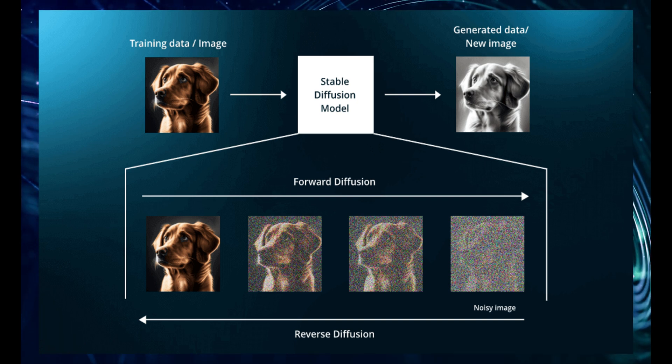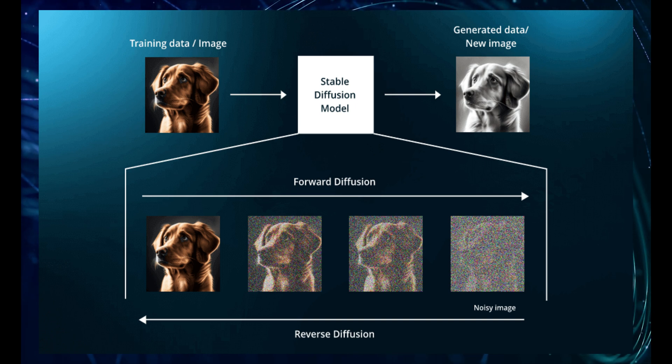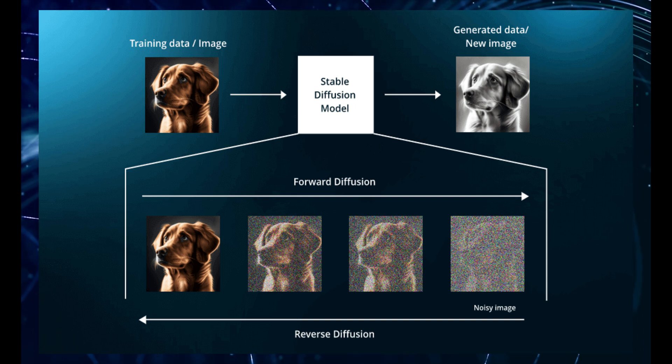So, in the case of these LCM, they're adding noise to the sentence embeddings, those numerical representations of meaning. And then, they're training the model to predict the original clean embedding, the one without the noise. And this process helps the model learn the relationships between different concepts, like how they connect to each other and how they can be combined to form coherent sequences of ideas.